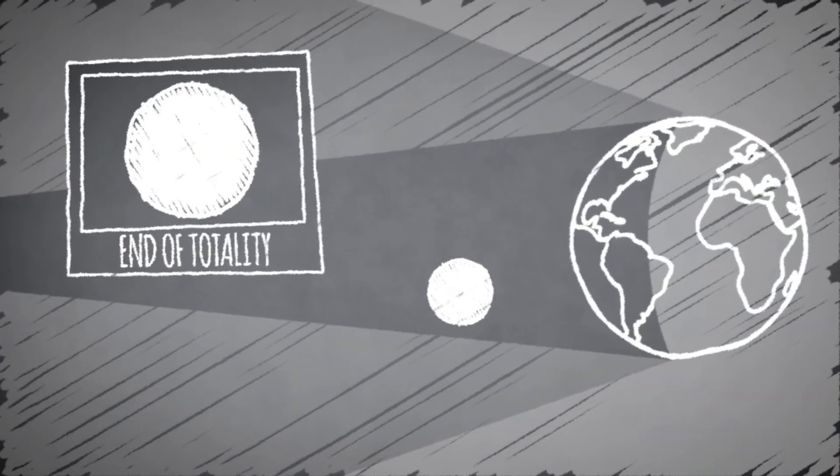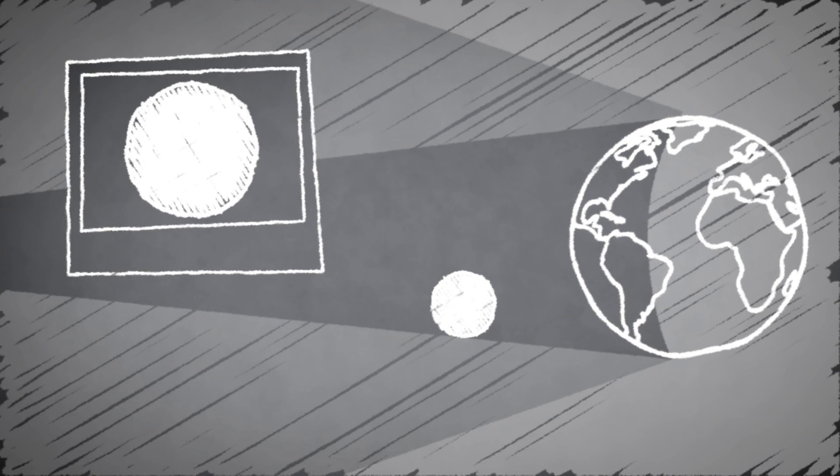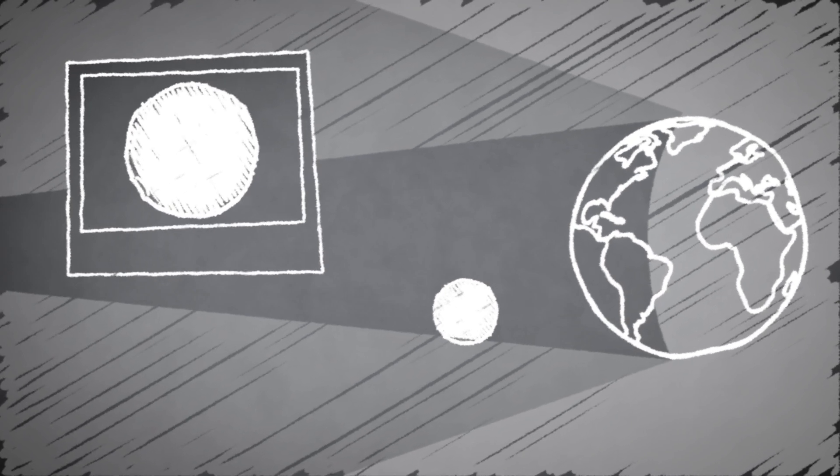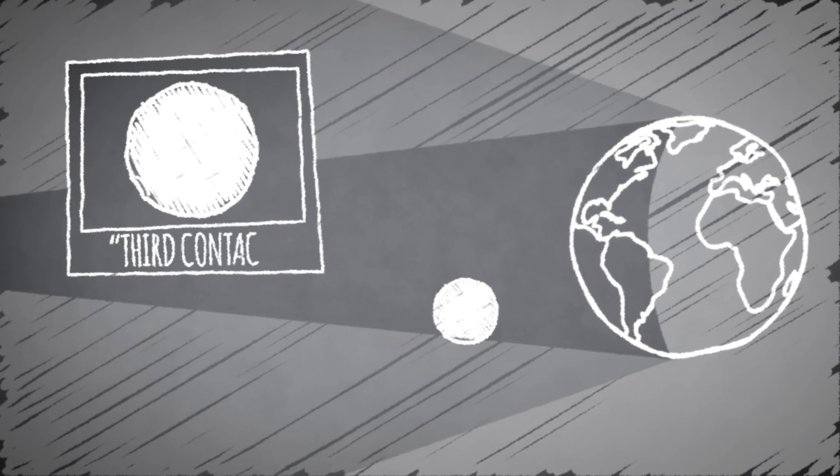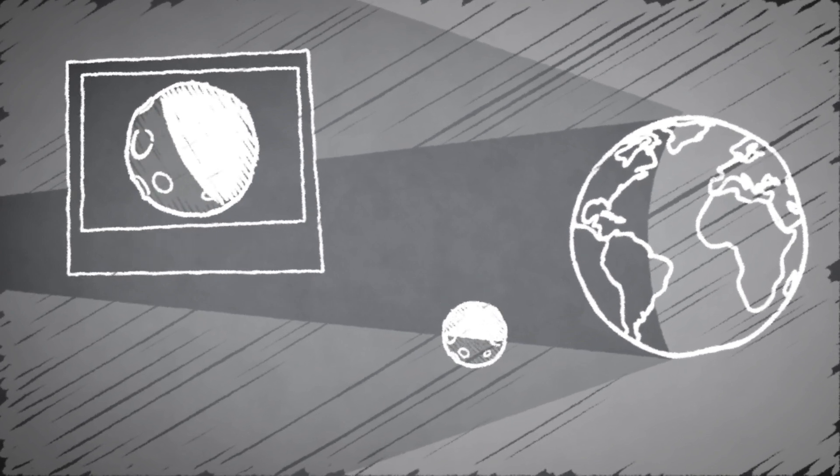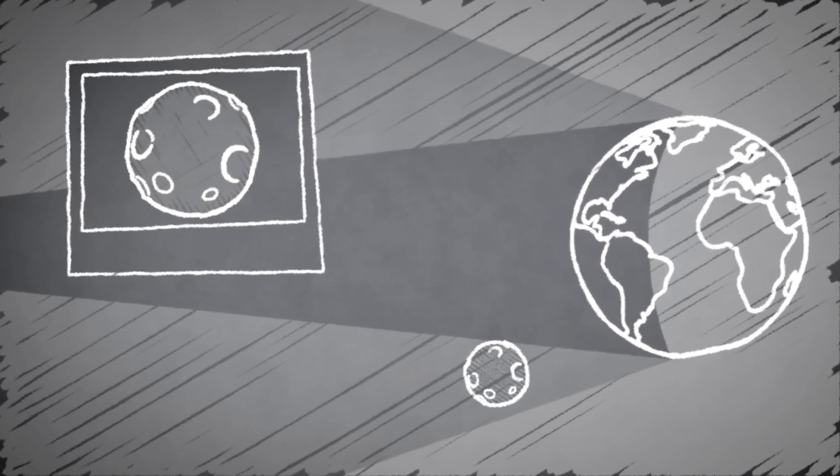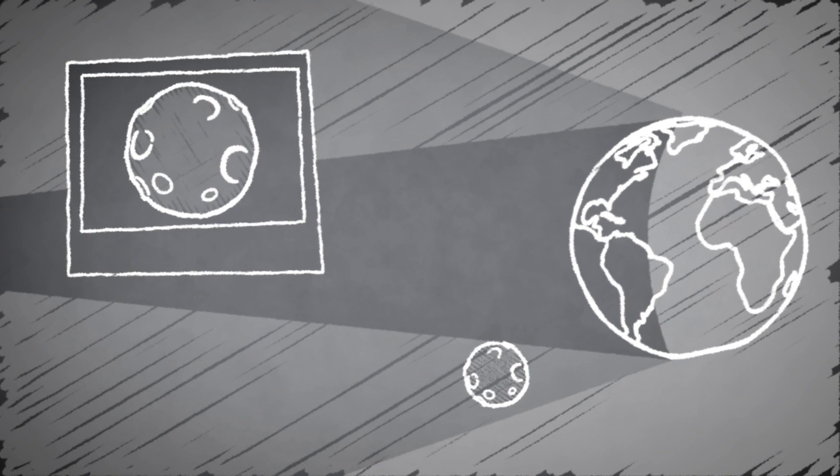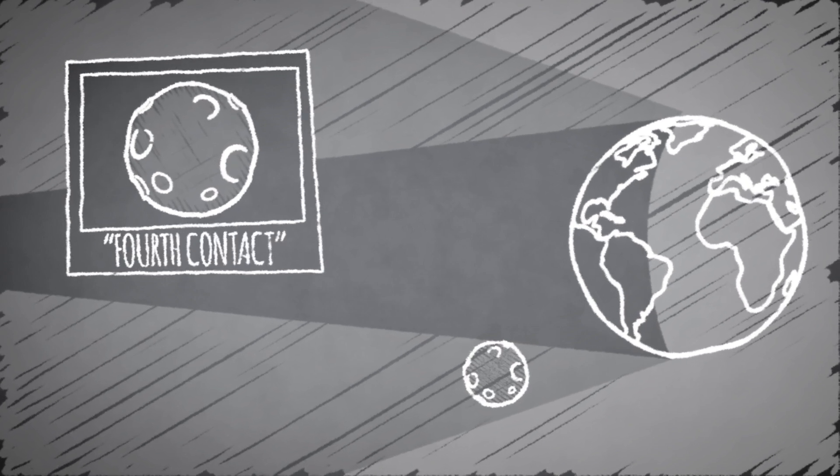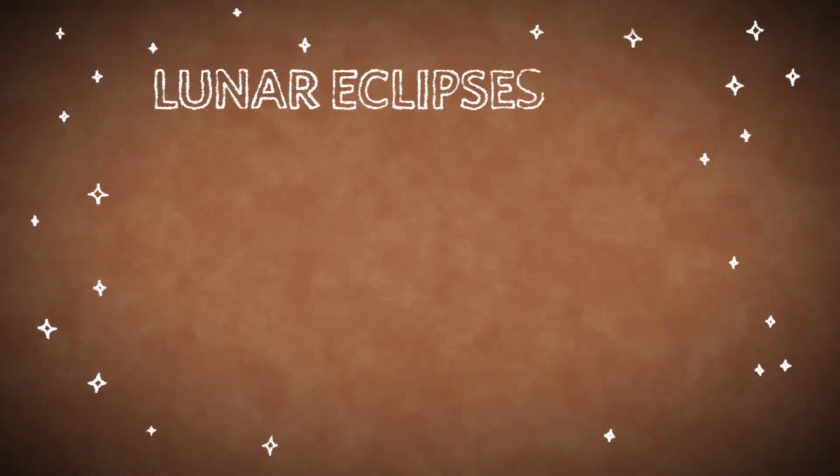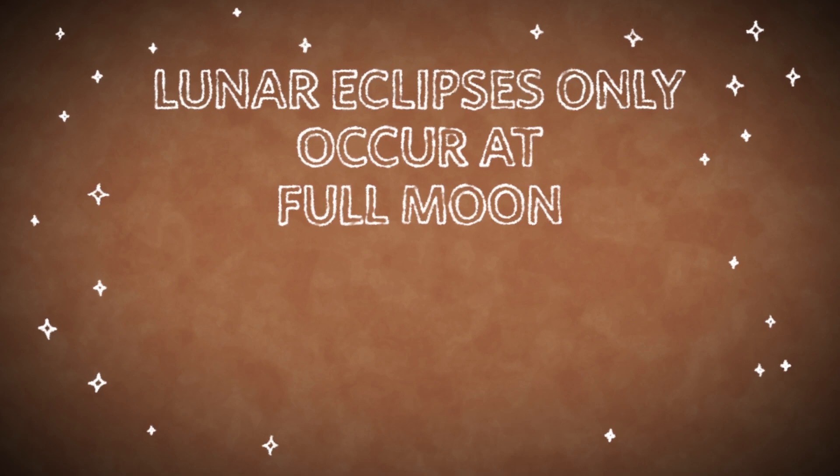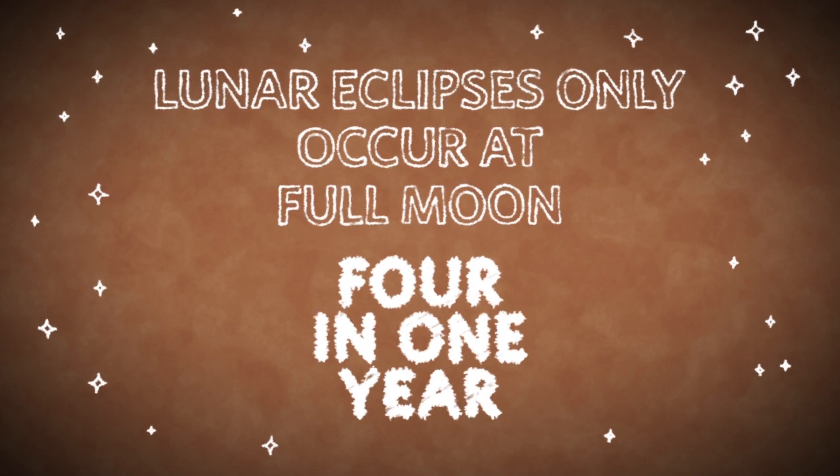Totality ends when the moon starts exiting the umbra, revealing a bright white edge. That moment is called third contact, and the entire eclipse ends when the moon is completely out of the umbra and back to its normal brightness—fourth contact. Lunar eclipses only occur at full moon, and there may be as many as four lunar eclipses per year.